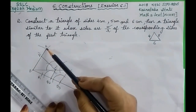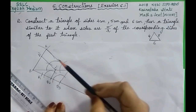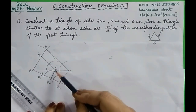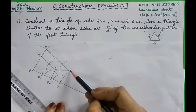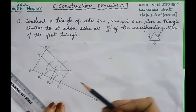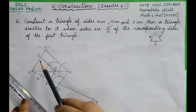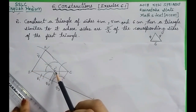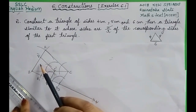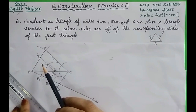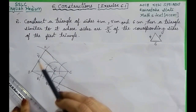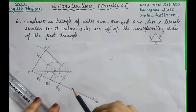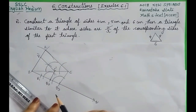So A'C' is parallel to AC, and B2C' is parallel to B3C. Now triangle A'B'C' is our required triangle, which is similar to triangle ABC. Now let us justify our construction.